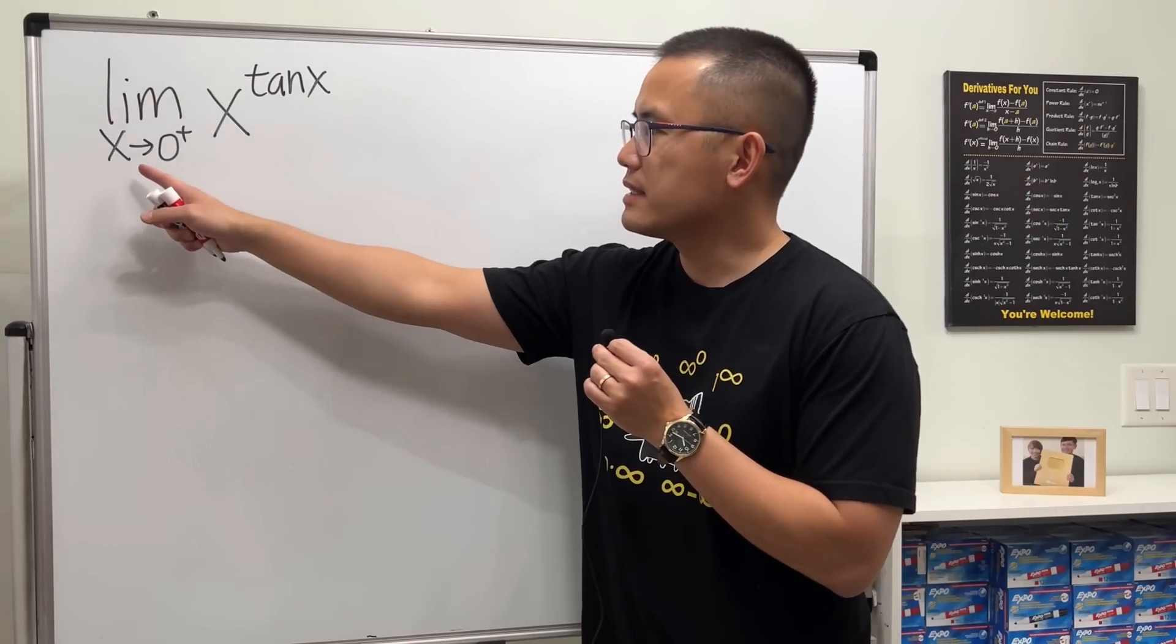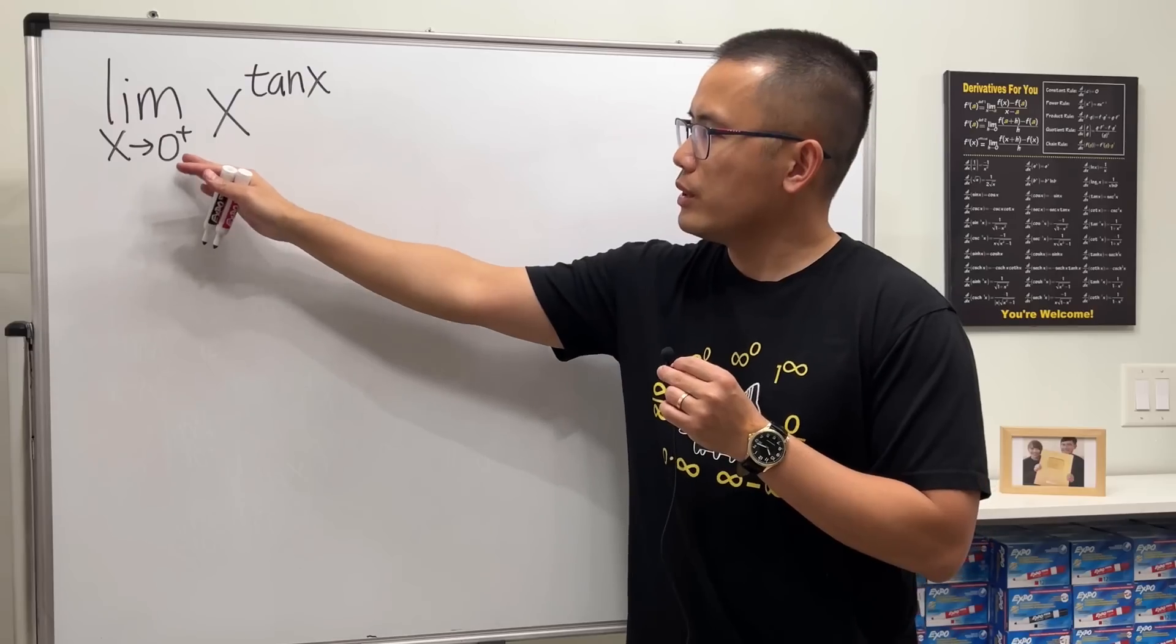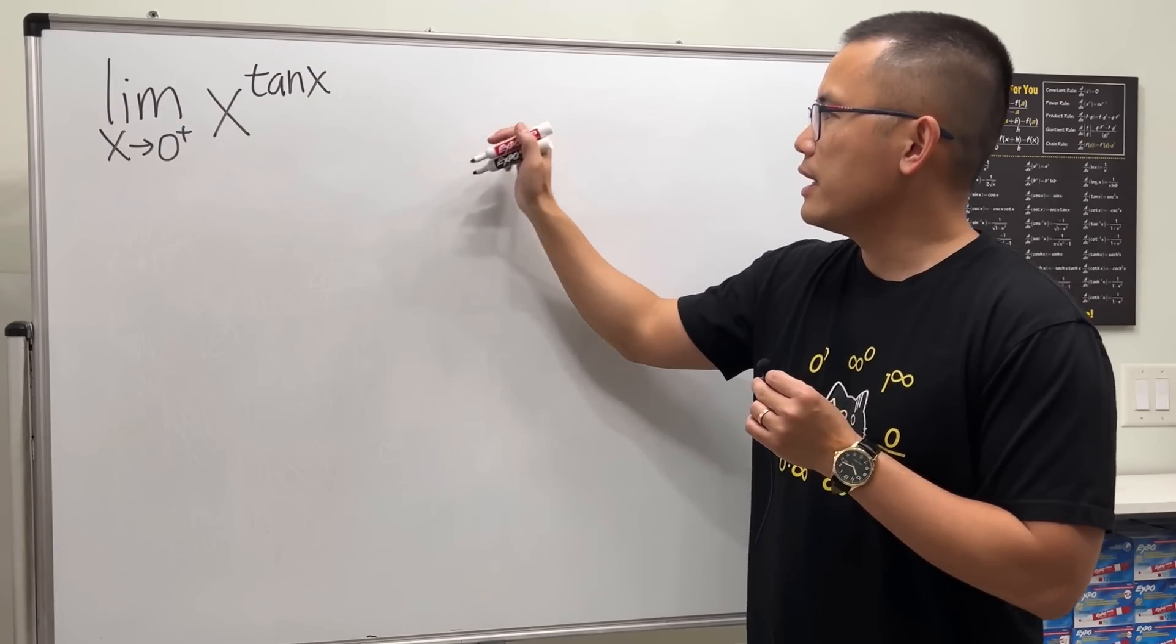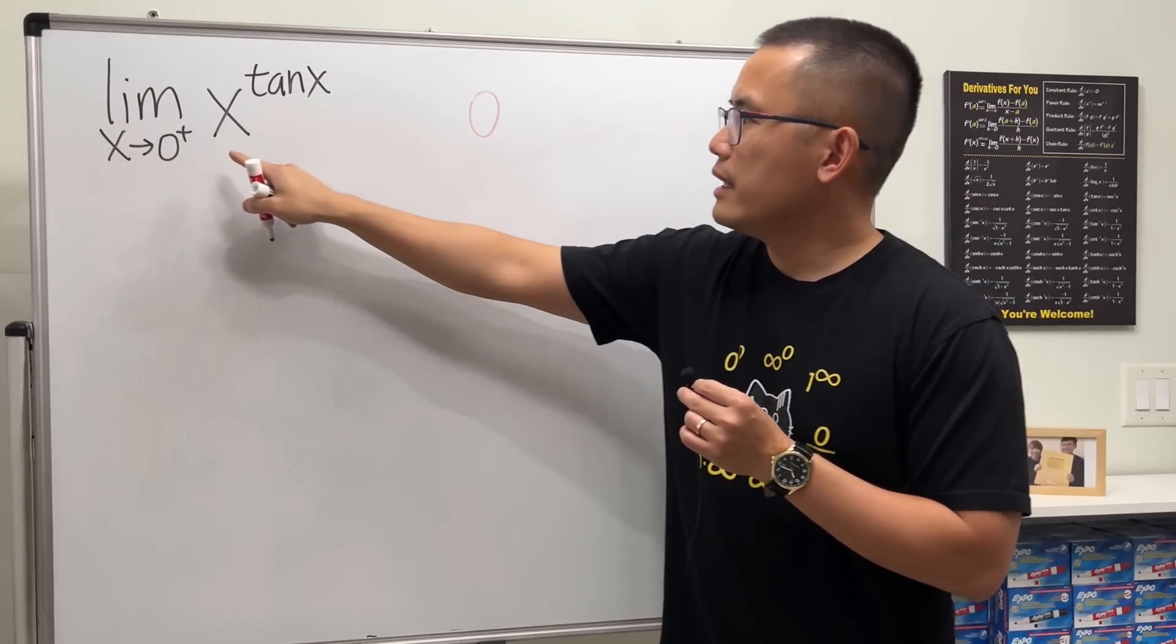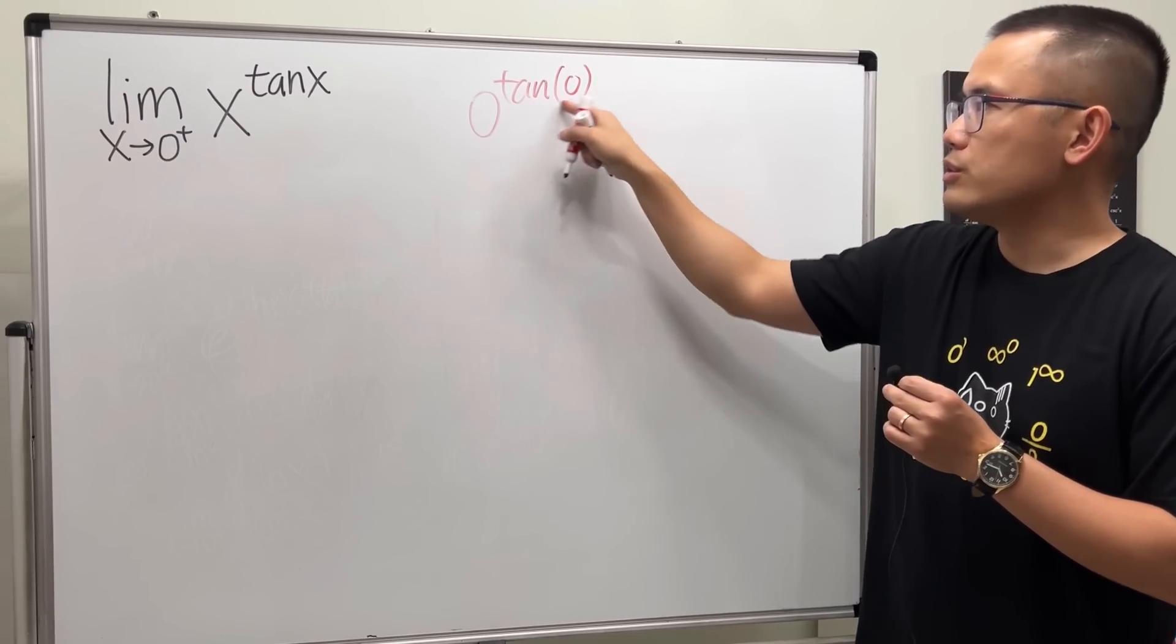We have the limit as x approaching zero plus of x to the tangent x power. First we put zero into all the x's. In that case we get zero, and then tangent of zero, tangent of zero is zero.